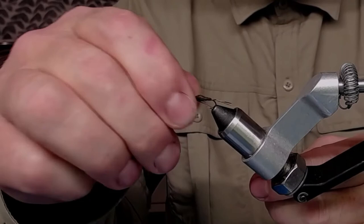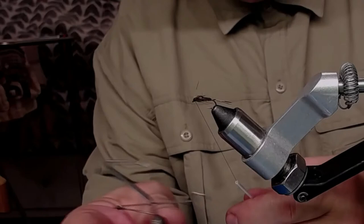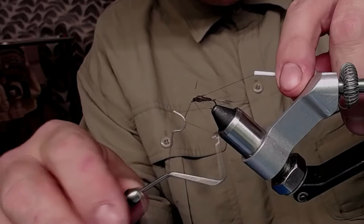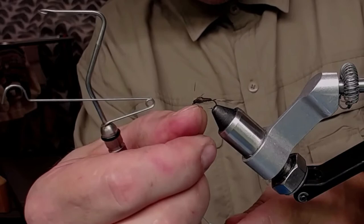Take your whip finish. Now I use regular whip finish. This one is from Stonfo. Quality tool. Like that. And snip it off with your sharp scissors.